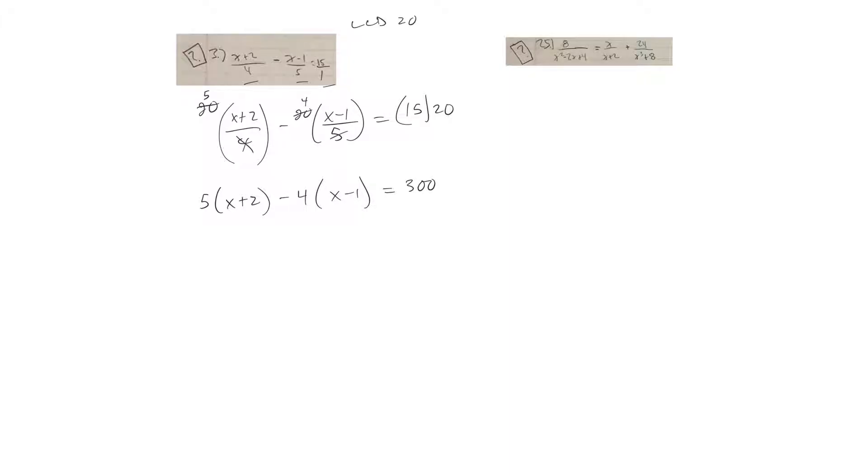Now use the distributive property. So it will be 5x plus 10 minus 4x plus 4 equals 300.